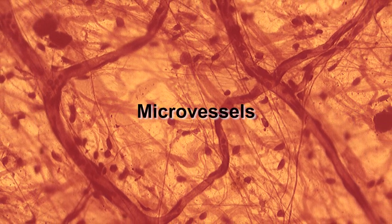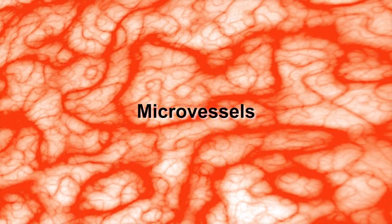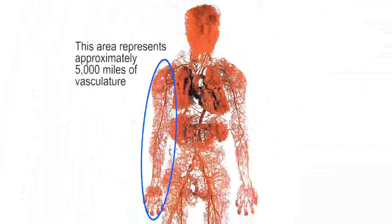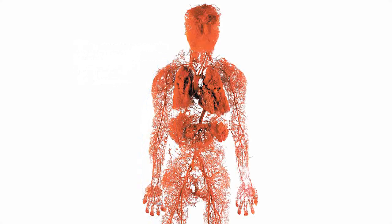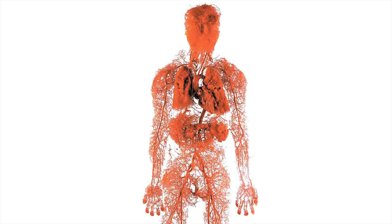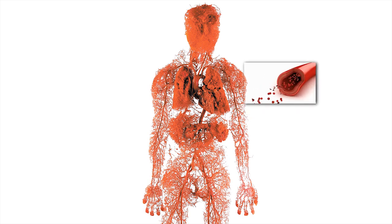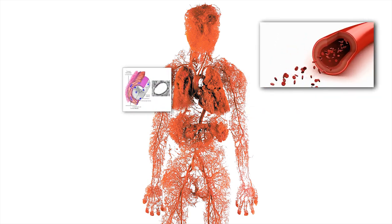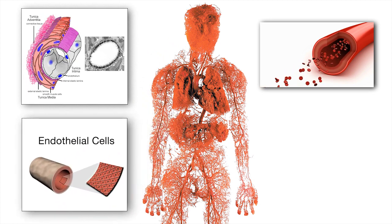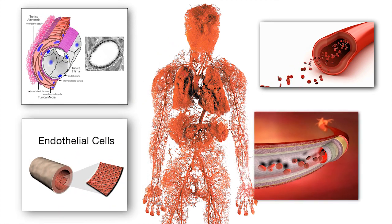The remaining 99.9% are micro-sized vessels that are barely visible. For example, this area represents approximately 5,000 miles of vasculature. Small changes in these micro-arteries, such as slight constriction or dilation, can result in significant changes in blood flow. In fact, blood pressure is predominantly controlled by these small arteries — arterioles. The reactivity of these micro-vessels is an important indicator of the body's vascular health.